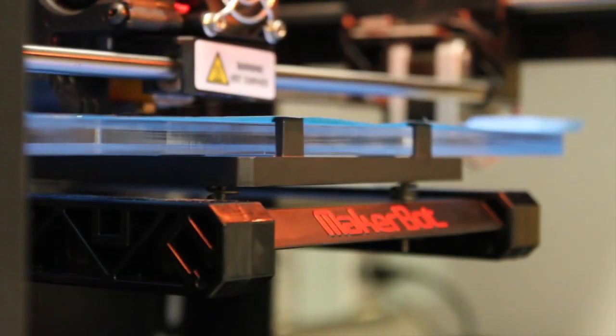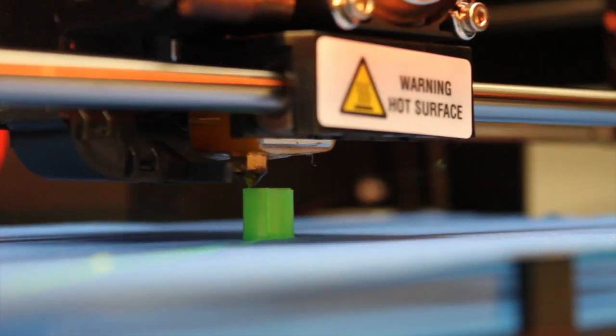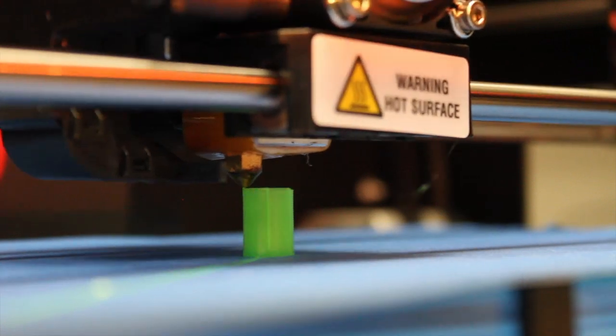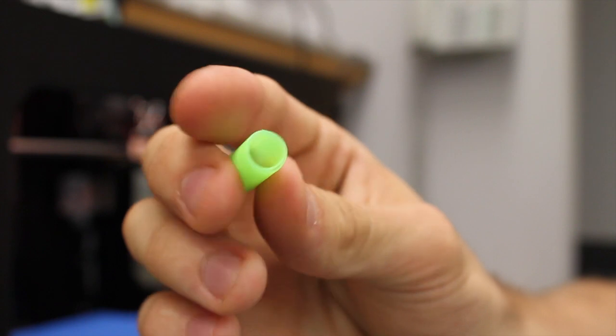You get this block of plastic and it feeds the plastic through a hot filament, and layer by layer it builds material on top of itself and it keeps building up the material until you get this 3D part.